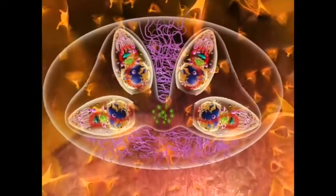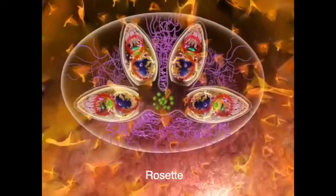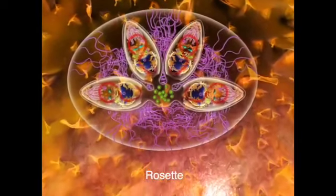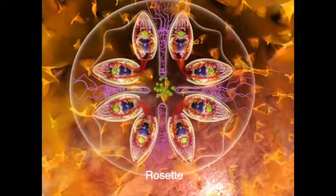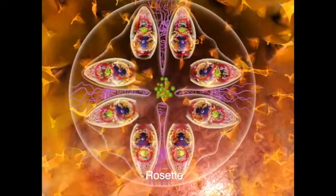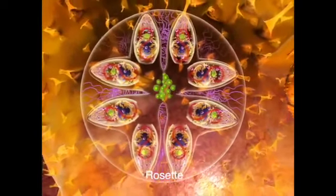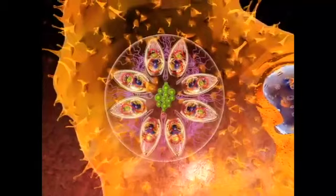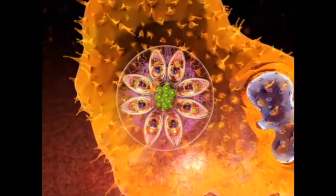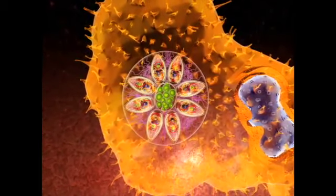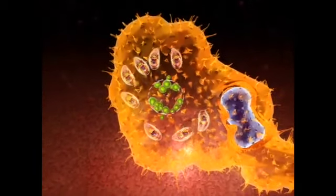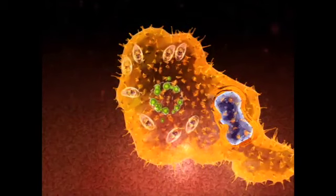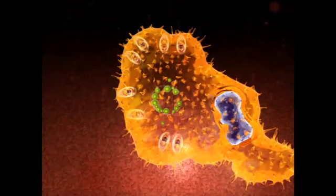After several endodiogenic cycles, the parasites are assembled as a rosette around the residual body. They progressively accumulate acidocalcisomes. Ultimately, the parasites detach from the residual body, break first the vacuole and then the plasma membrane, and move seeking for new host cells to invade. This cycle then repeats.